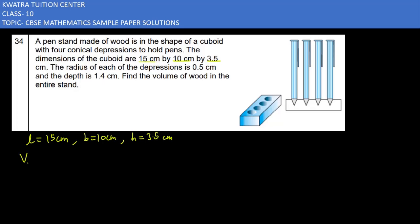Then they are saying radius of each of the depression is 0.5 cm. So this will be our cuboid findings, because the volume of cuboid we have to get, because that is the main part of it.